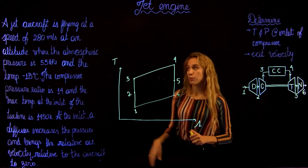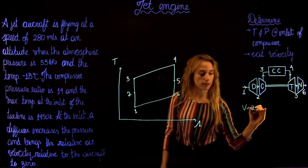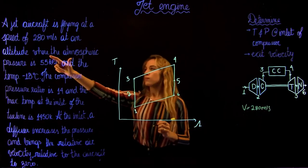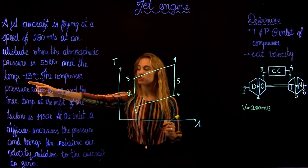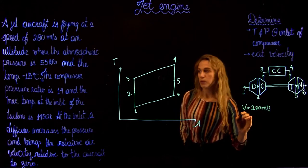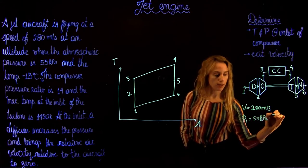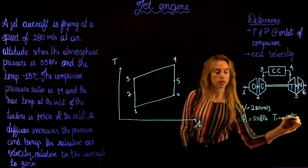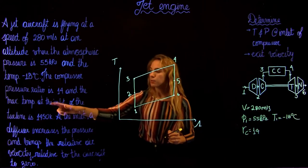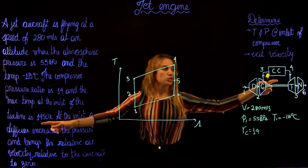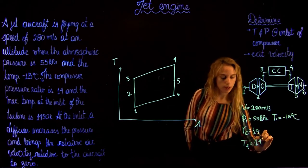Now we can see the values given in our problem. We have a velocity of 280 meters per second. We have an atmospheric pressure of 55 kilopascals and a temperature of minus 18 degrees Celsius, so P1 = 55 kPa and T1 = minus 18°C. We have a compressor ratio RC = 14, and the maximum temperature at the inlet of the turbine, T4 = 1450 Kelvins.